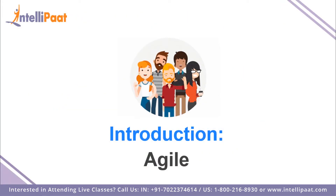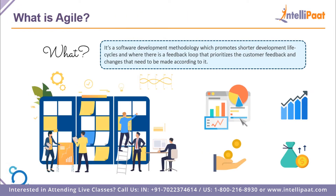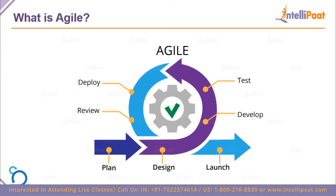We'll start off by discussing what exactly agile is. Agile is a software development methodology that promotes shorter development life cycles. It makes sure that the life cycle of a particular software being produced is very short, because it needs to ensure that customer feedback is prioritized, and that feedback is then used to make changes in the next cycle. The cycle of agile consists of planning, designing, developing, testing, deploying, reviewing, and launching.